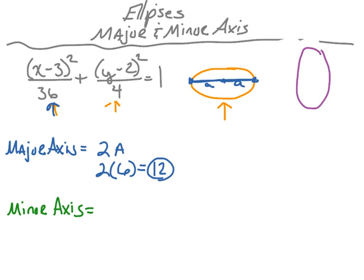For the minor axis of this horizontal ellipse, we look at the vertical distance B. B equals the square root of 4, which is 2, and 2 times 2 gives 4. So the minor axis is 4 units — meaning the distance from the top point to the bottom point is 4 units.